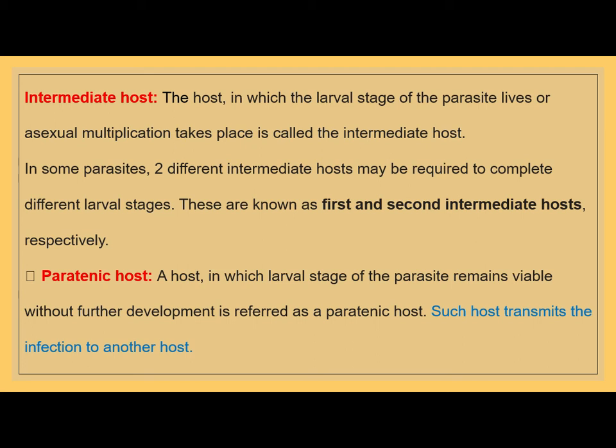Another type is the intermediate host — the host in which the larval stages of the parasite live or asexual multiplication takes place. In some parasites, the intermediate host may be one or two, and they are known as the first and second intermediate host. Another type of host is paratenic — a host in which larval stages of the parasite remain viable without further development. Such hosts are a good source for the transmission of infection to other hosts.